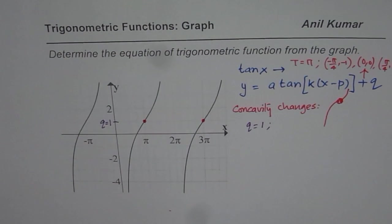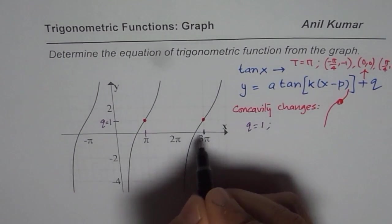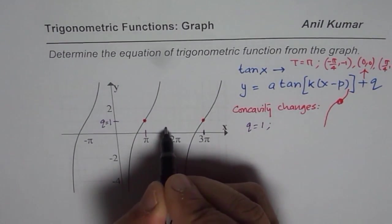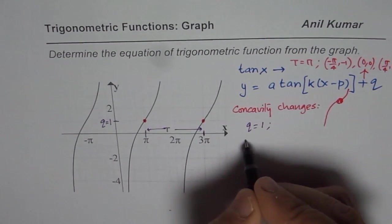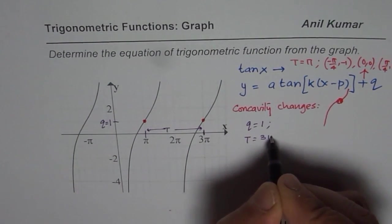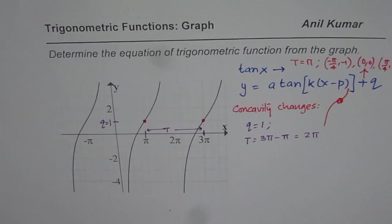Second, it also gives us how much has it changed horizontally? This position gives us the time period. So for us, time period is 3π minus π, which is 2π.